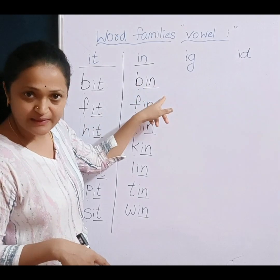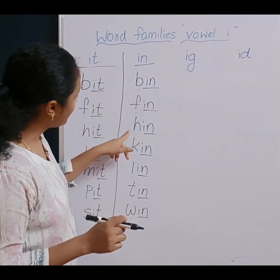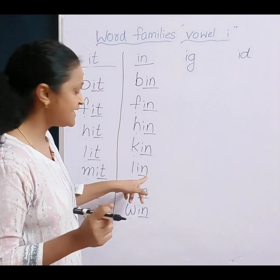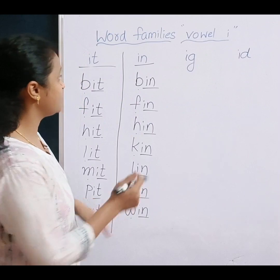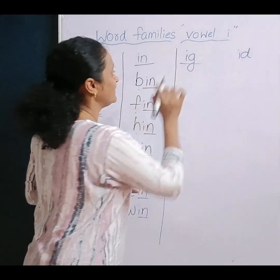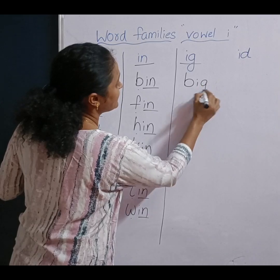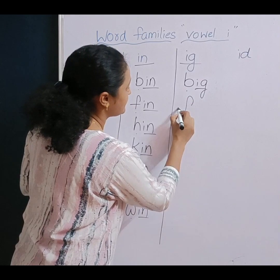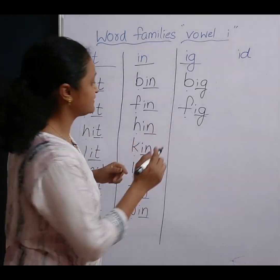Now, let's read. Ig family words. B, ig. Big. B, ig. Big. F, ig. Fig. F, ig. Fig.